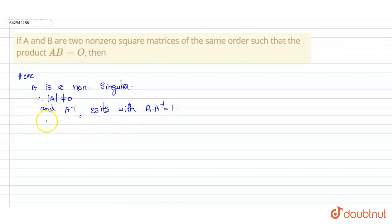And A inverse exists with A·A^(-1) = I. So here, therefore, AB = O. Such that A^(-1)·AB = (A^(-1)·A)·B = I·B = B.